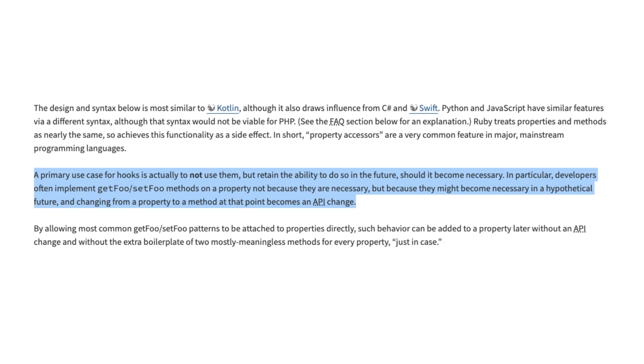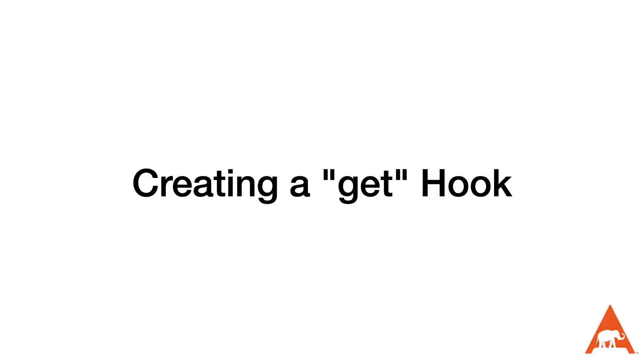Changing from a property to a method at that point becomes an API change. The get hook is used to define what happens when a property is read.